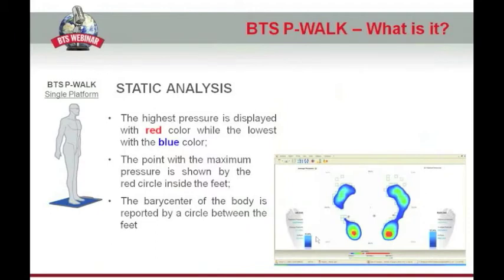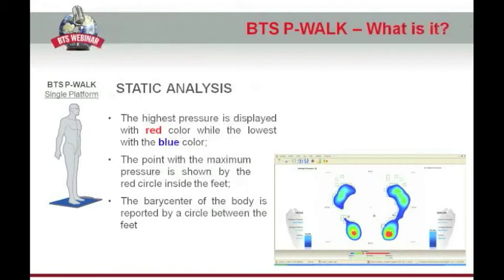In order to understand which areas have higher or lower pressure values, a colored scale is used. As pressure values increase, the color changes from blue to red, passing through green and yellow to identify areas with pressure values in the middle. The point with the maximum pressure is shown by a red circle, and the circle between the feet represents the barycenter of the body.